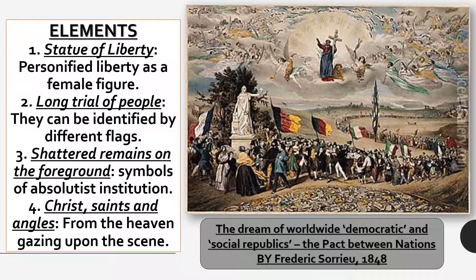So here is the long trail of people, and after that there are the shattered remains of the absolutist institutions. The fourth and most important element we can see in this painting is at the top — Christ, saints, and angels, who are all blessing the people from heaven.